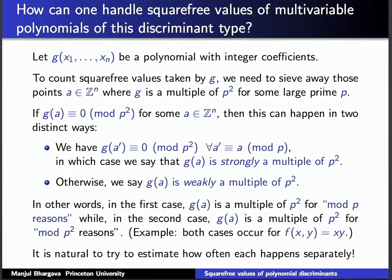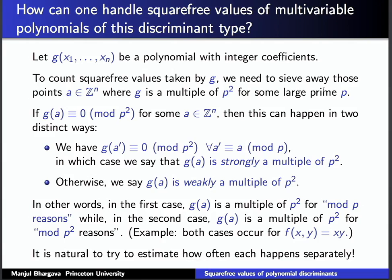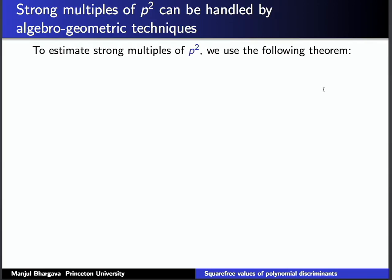We look at those two cases separately. The case of strong multiples — multiples of p² for mod p reasons — can actually be handled totally generally for an arbitrary multivariable polynomial using algebro-geometric techniques. Specifically, we use a quantitative version of what many are now calling the Echdel sieve.